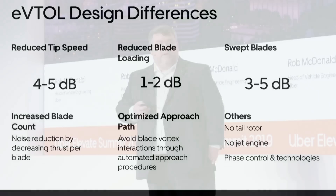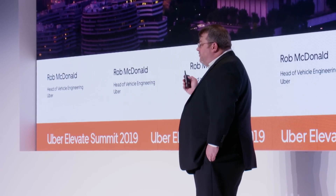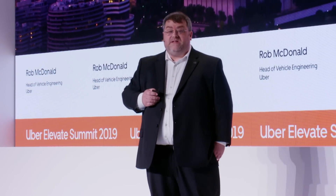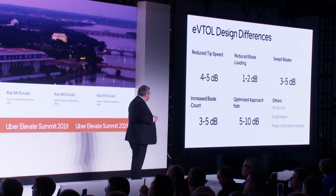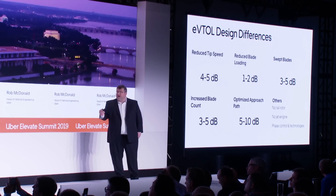Very importantly — critically importantly — we can optimize the flight path. On approach, we can avoid blade vortex interaction, BVI, a huge source of noise, and through having very controlled, precise flight paths, we can reduce the noise by 5 to 10 dB. And then there are other opportunities as well. We can eliminate the tail rotor. We don't have a turbine engine with its whine. And there are advanced technologies like phase control through which we can probably get another 2 to 3 dB.